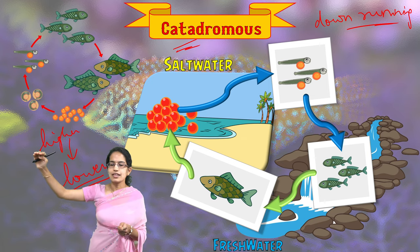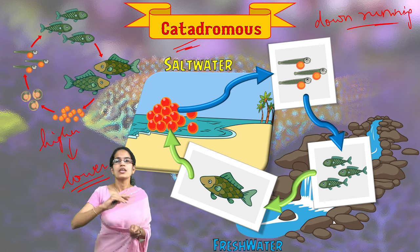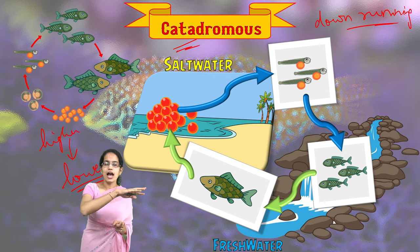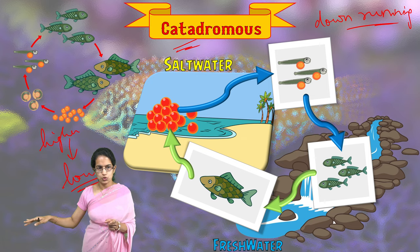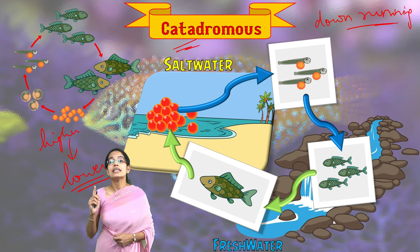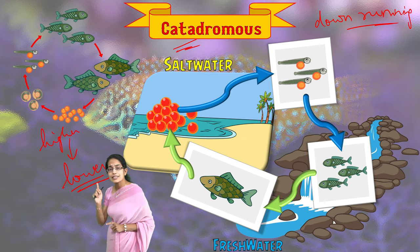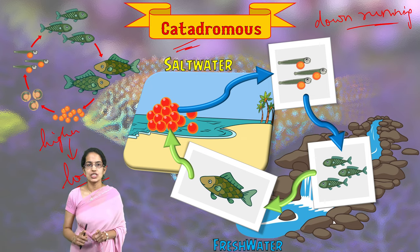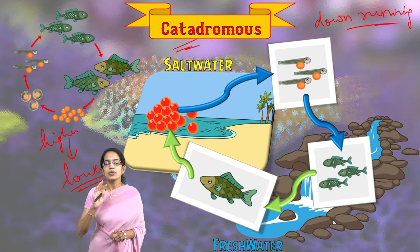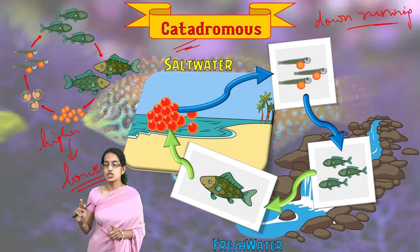Catadromous fishes start their life cycle from freshwater, moving into saltwater. In this process, they lay the eggs in saltwater and then move back to freshwater. It is very important to note that these fishes — be it catadromous or anadromous — end their life cycle once they lay the eggs. As soon as they lay the eggs, their life cycle ends, meaning the fishes no longer exist.